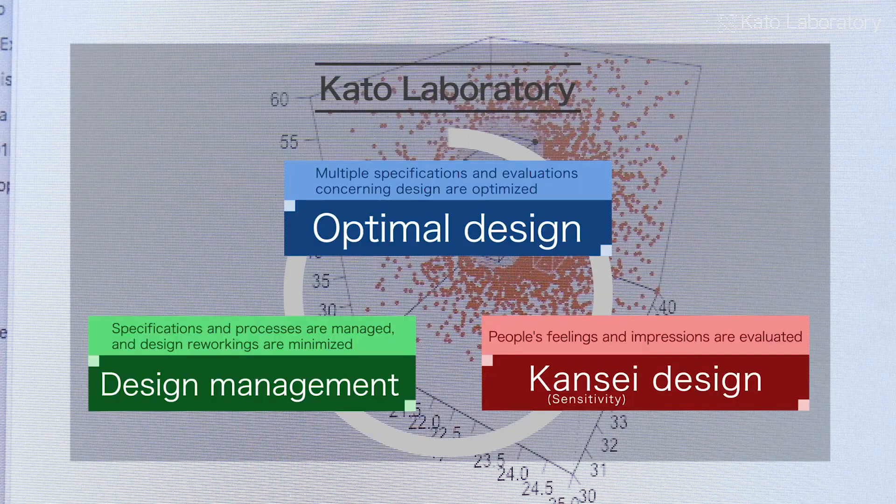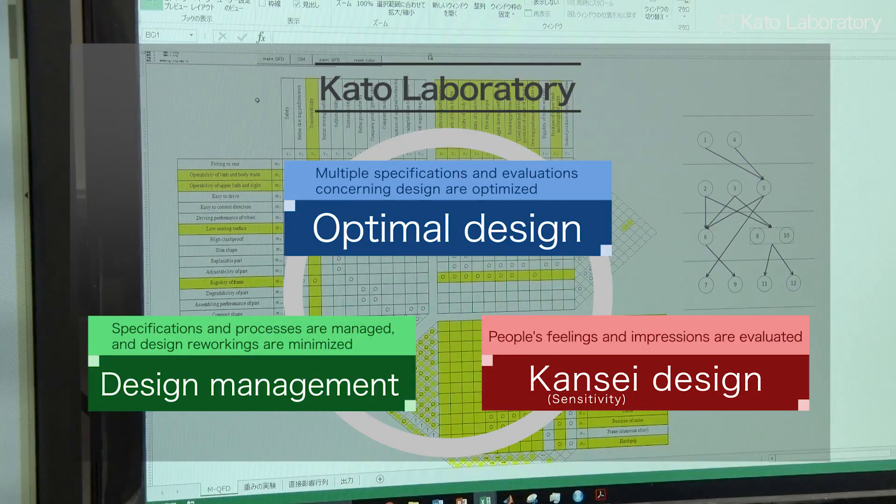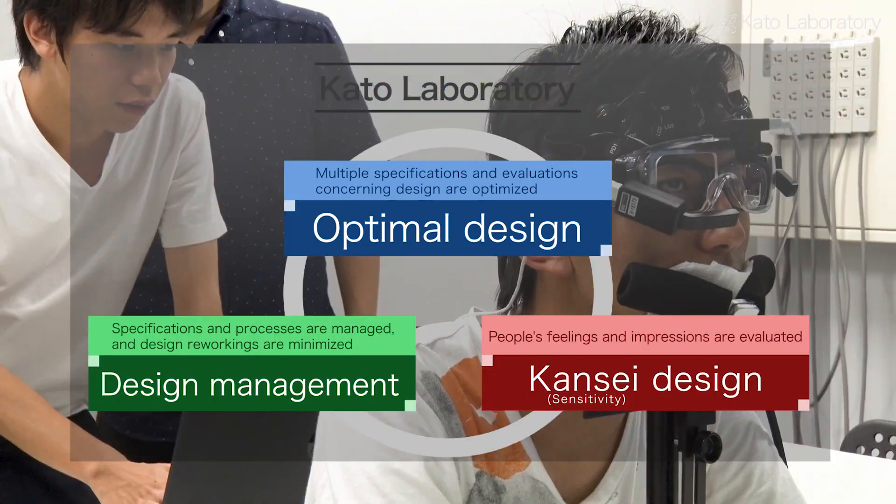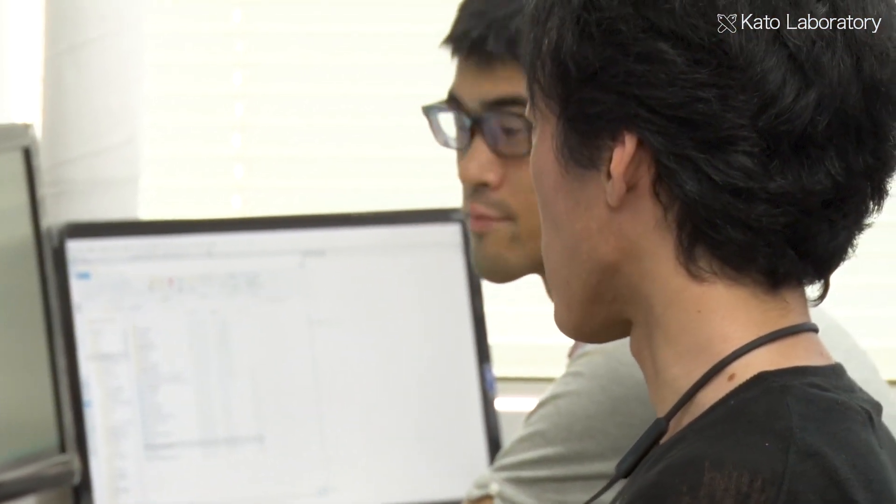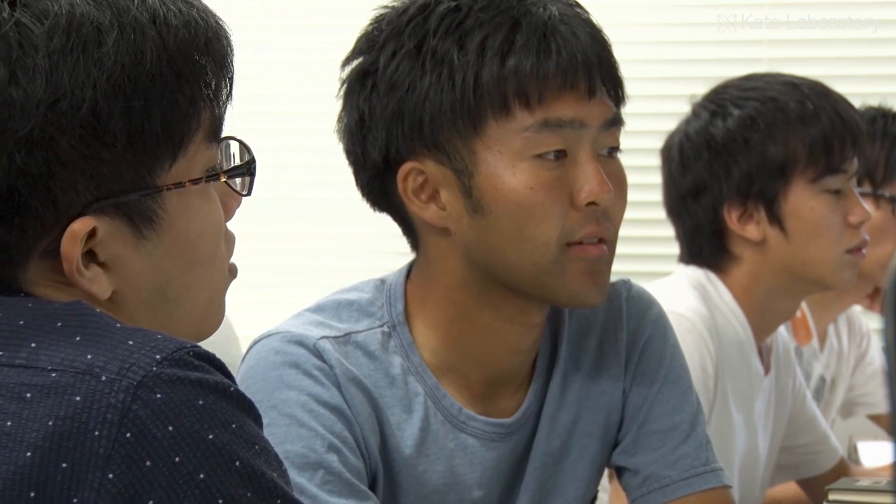Focused on these three research areas, by quantifying the design process and people's sensitivities, the CATO laboratory is aiming to bring about AI-coordinated design and automated design.